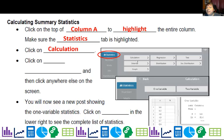Make sure the statistics tab right there is highlighted. Okay, then click on calculation which is right there. Once you do that, you're going to get this screen. So you're going to click on one variable right there.